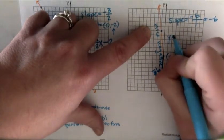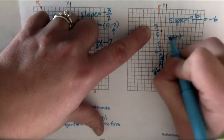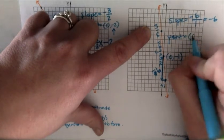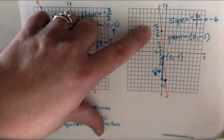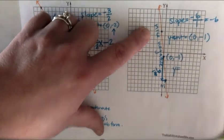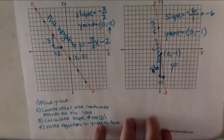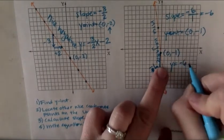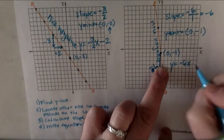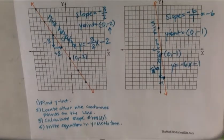My y-intercept is equal to 0, negative 1. So that means my equation in y equals mx plus b form. So slope is my m. So y equals negative 6x minus 1 for my b. And I'm done.